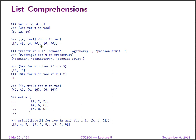Much more interesting are list comprehensions. We can take a list and produce a new list from the original. For instance, if we have a list of numbers in VEC, we can say '3*x for x in VEC', and we produce the list of all elements in VEC each multiplied by three.